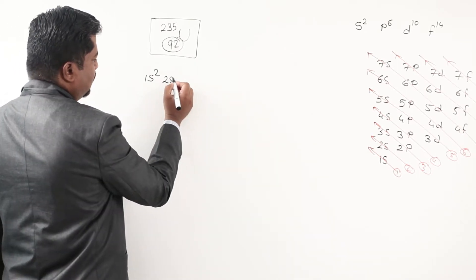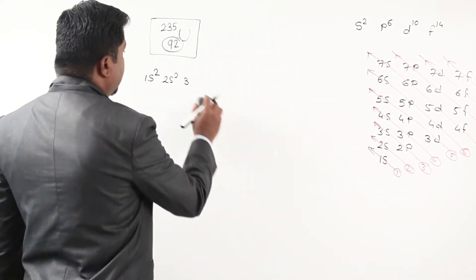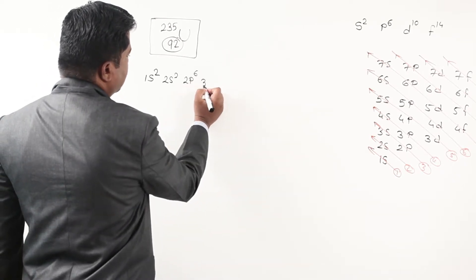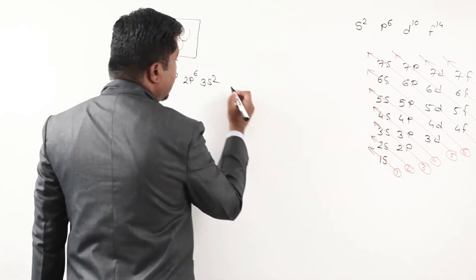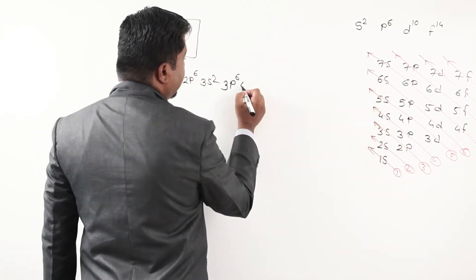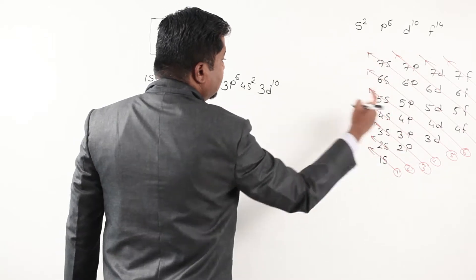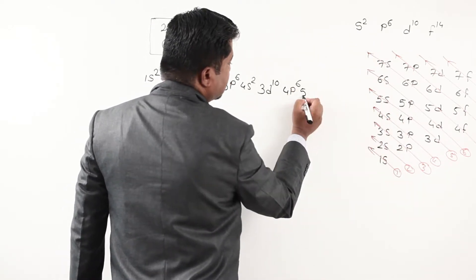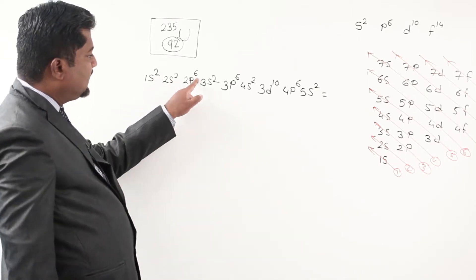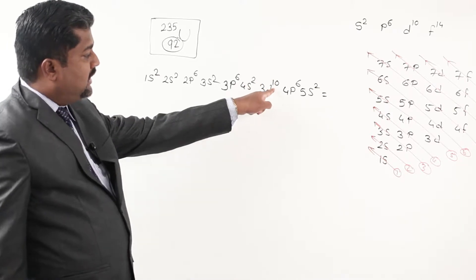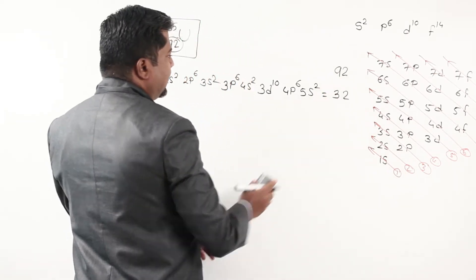Starting from the chart: 1s2, 2s2, 2p6, 3s2, 3p6. Since abundant electrons are there, I should not worry initially. After 3s, next is 3p6. Again 4s2, then 3d10, then 4p6, 5s2. That is the end of my first series. Making total: 2+2+6+2+6+10+6+2 = 36, then plus 2 is 38 electrons accounted for out of 92.